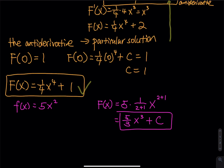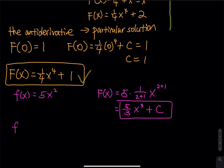What about f(x) = eˣ? The derivative of eˣ is still eˣ, so the antiderivative F(x) is just eˣ. If you take the derivative of this, you get eˣ back. But since this is an antiderivative, I need to do plus C.